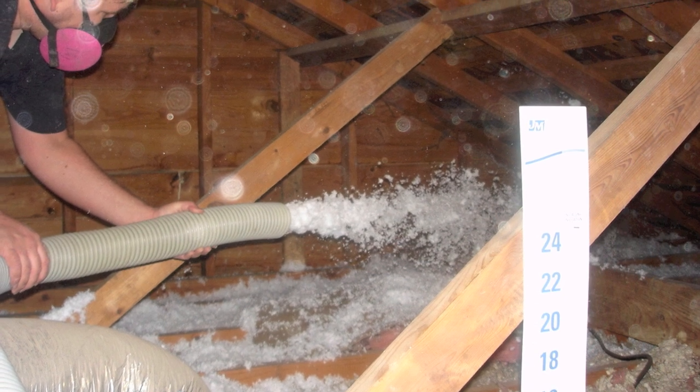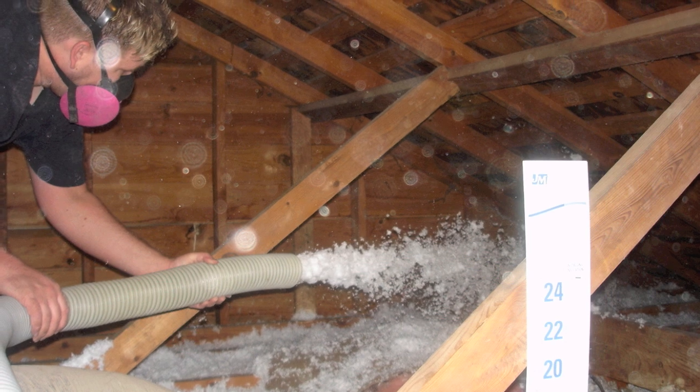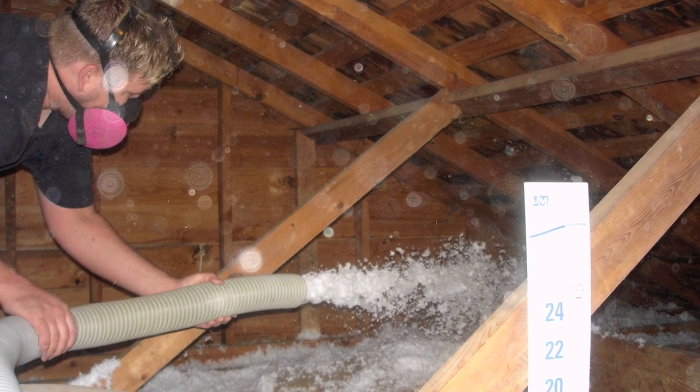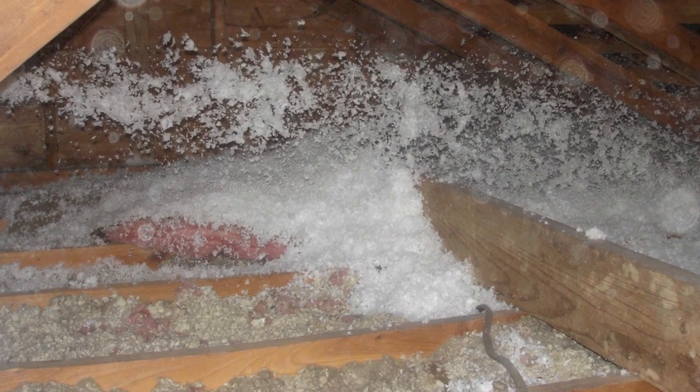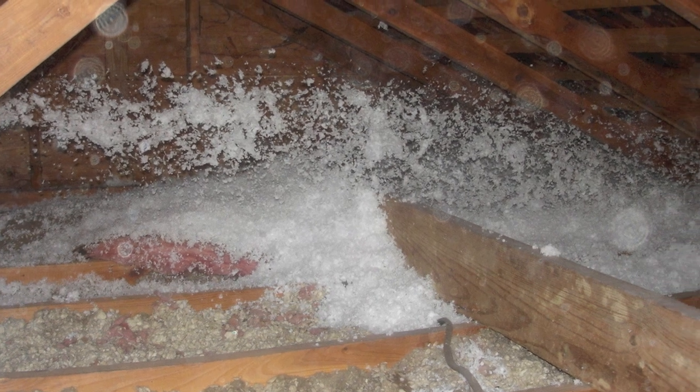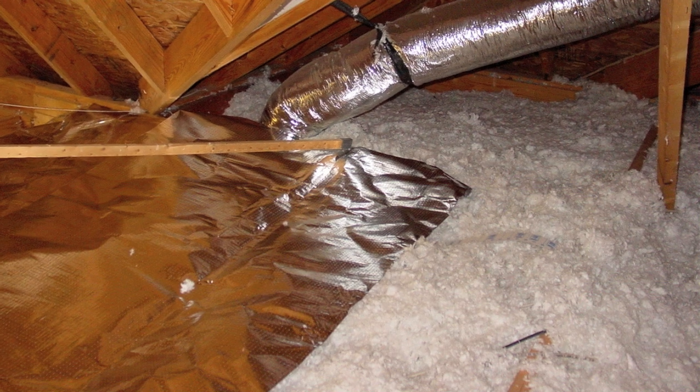First, let me be very clear. Radiant barrier is not a substitute for traditional attic insulation. They will actually work together to maximize the comfort and efficiency in your home. Regular insulation, whether it be fiberglass or cellulose, works to reduce conductive heat loss, whereas a radiant barrier reduces radiant heat loss.